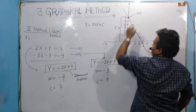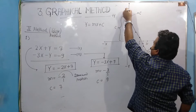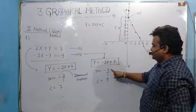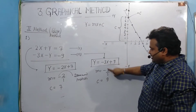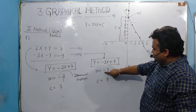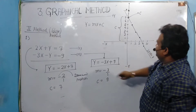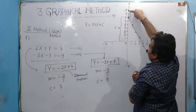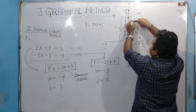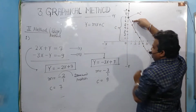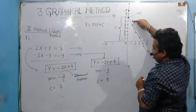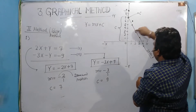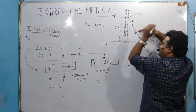Now c = 9 is positive, so I need to extend the graph. Counting 7, 8, 9 — this is the starting point for the second equation. Again, the slope is negative: 3 steps downward, 1 step rightward. From this point I move 3 downward — 1, 2, 3 — and 1 rightward, giving me the first point.